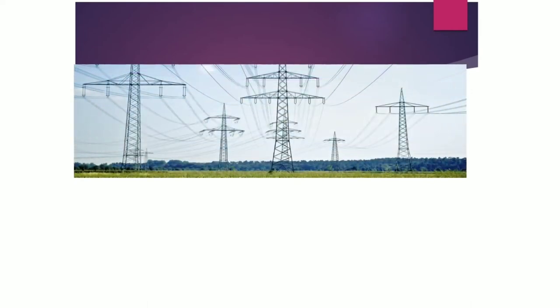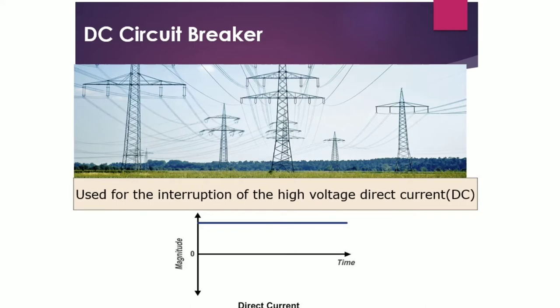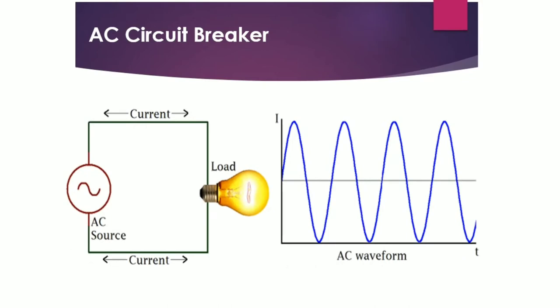We don't transmit DC power over long transmission lines because we cannot step up or step down the DC system voltage easily. In some rare cases DC circuit breakers are used. DC is the unidirectional flow of electric charge whose magnitude is constant at all times. So the DC circuit breaker is only useful for DC power systems, not AC power systems. Nowadays we mainly use AC circuit breakers.